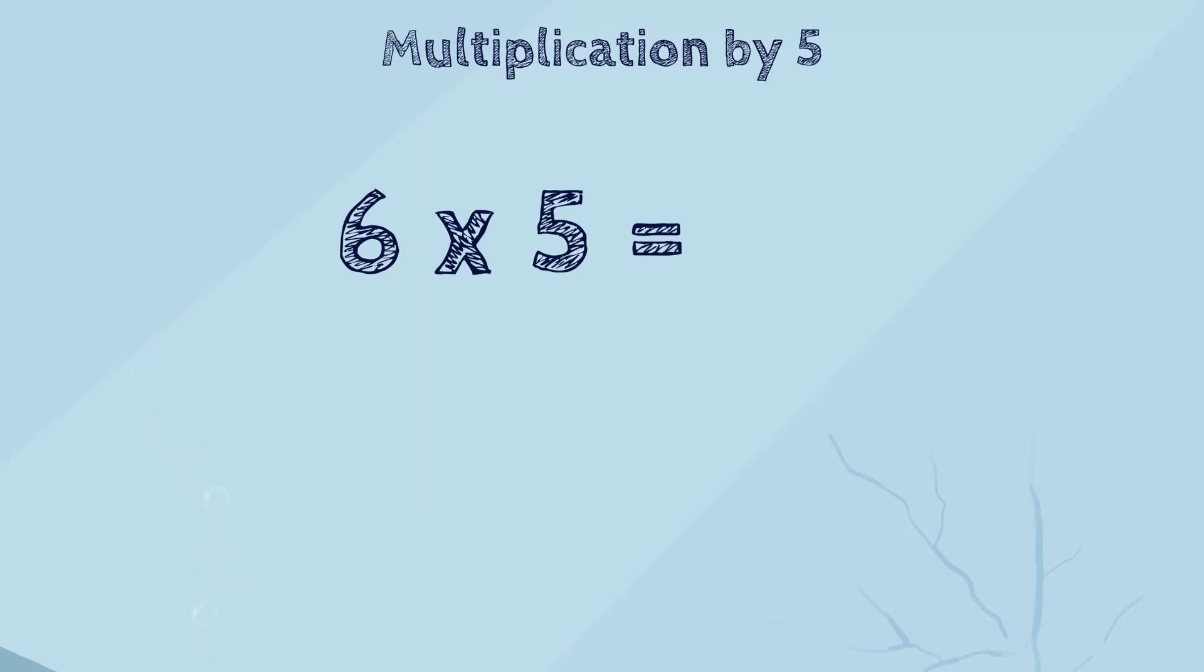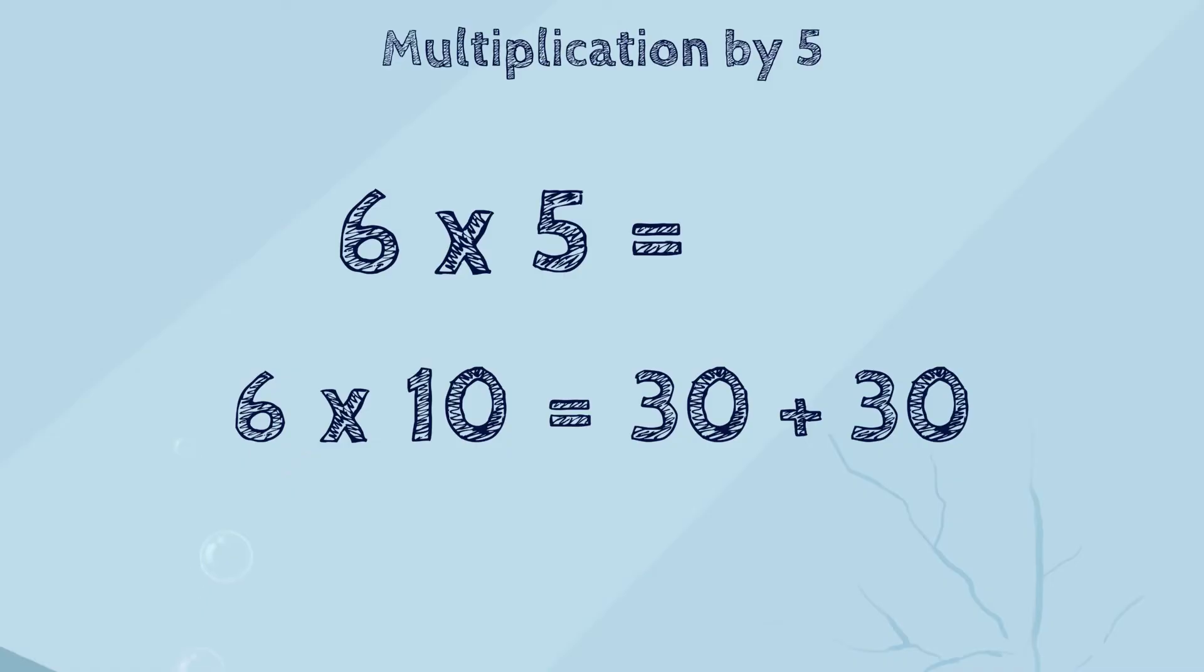Let's return to our example. The problem was, what is 6 times 5? First, we'll multiply 6 times 10. That's 60. Then we'll take half of 60. That's 30. So, 6 times 5 is 30.